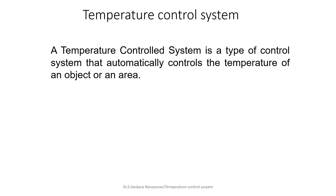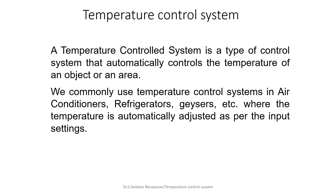We can call the space whose temperature we want to measure as that object or area. Using this temperature control system, we are going to control the temperature of either an object or an area. This system is normally applied in home appliances like air conditioners, refrigerators, geysers, and other home appliances, where the temperature is automatically adjusted as per the given input settings.